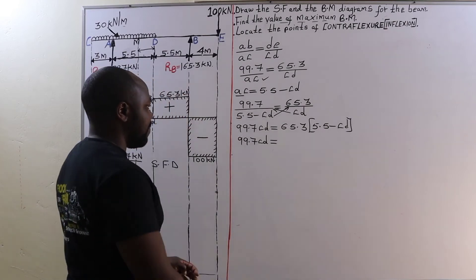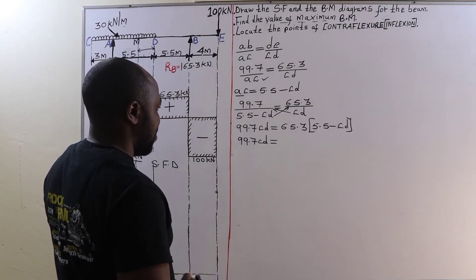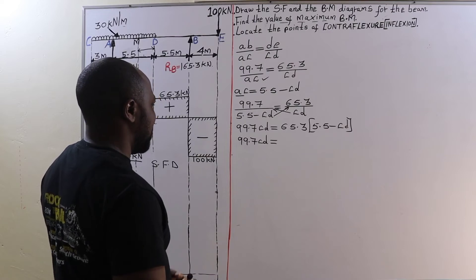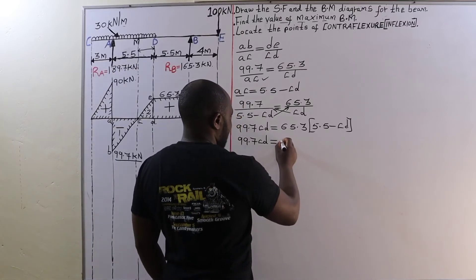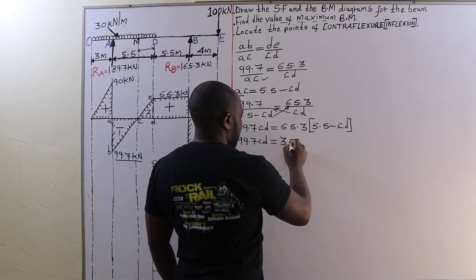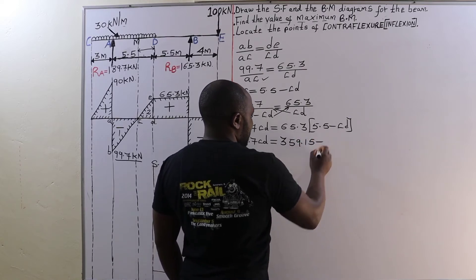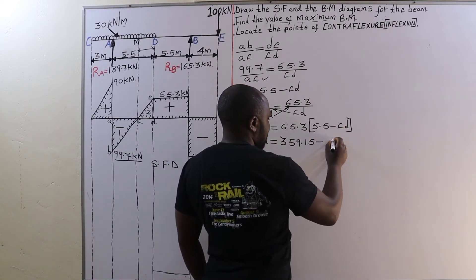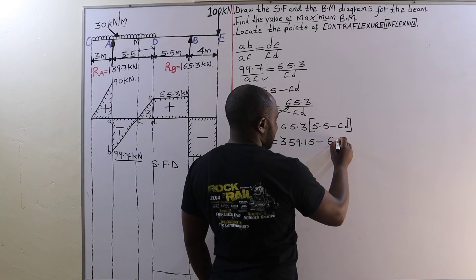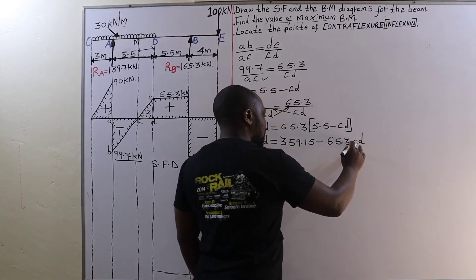This is going to be 99.7 CD is equal to now 65.3 times 5.5, that is going to be around 359.15. Therefore 359.15 minus 65.3 CD.